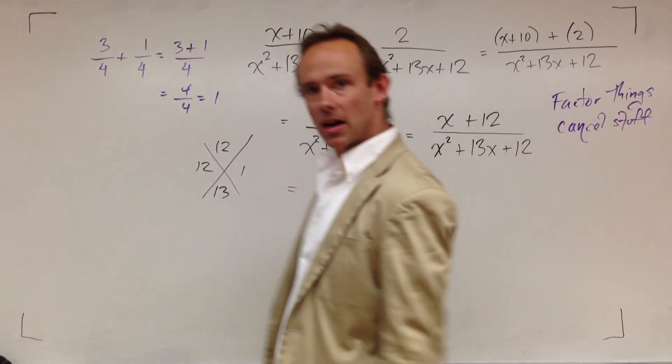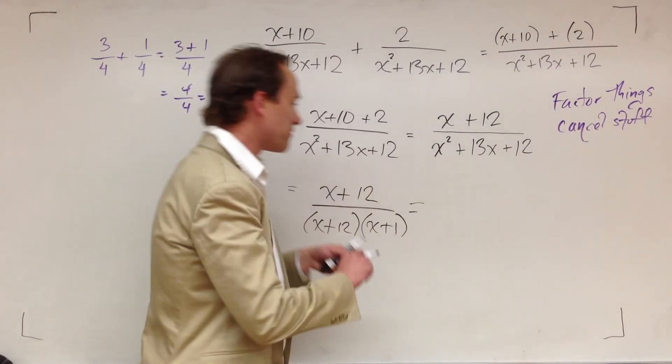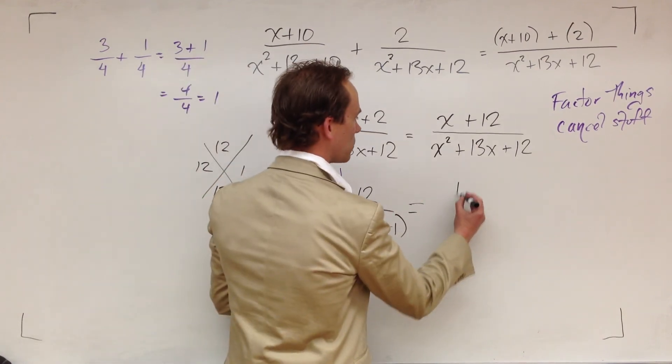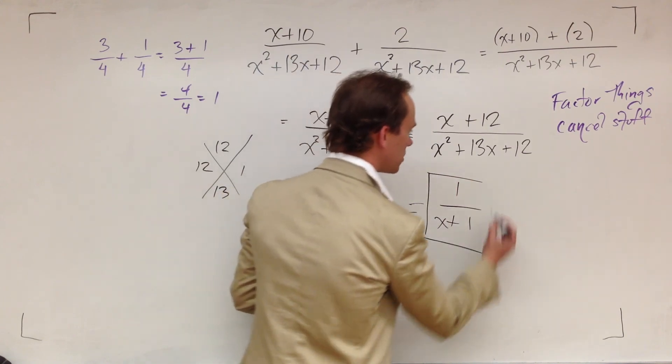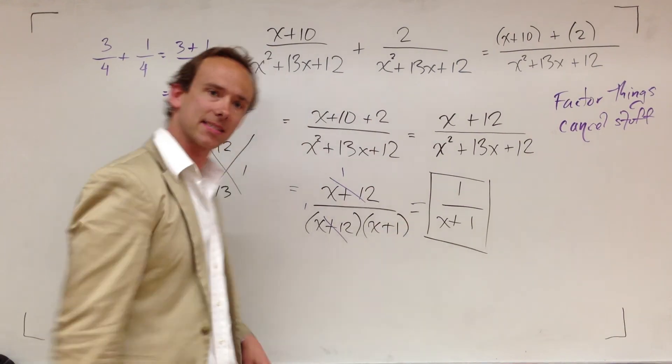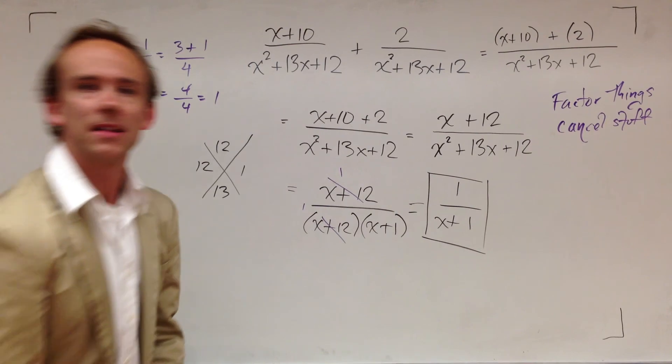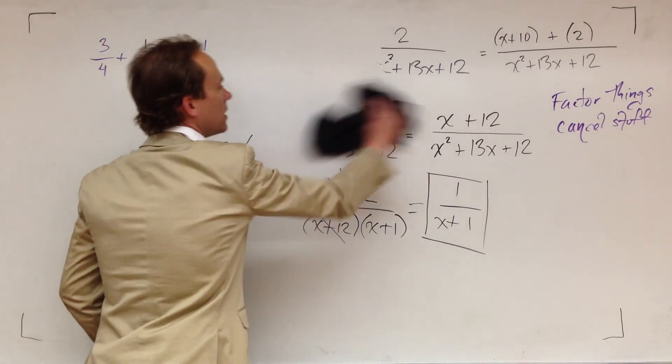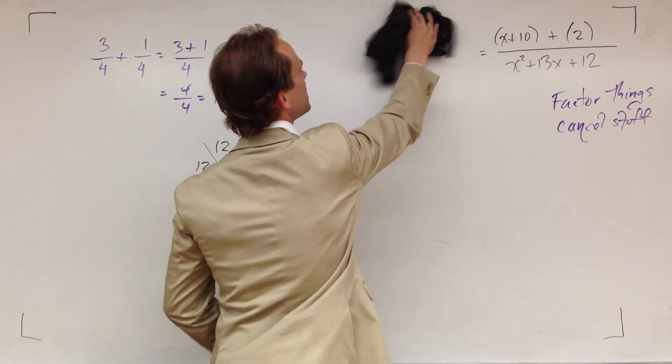Now I'm going to worry about canceling stuff. I wasn't worried about canceling stuff because I hadn't factored. But now that I've factored, I'm going to look at this problem, cancel the things that are a 1, and I'm going to get 1 over x plus 1. You got this. Ain't no worries. Let me give you one more though.